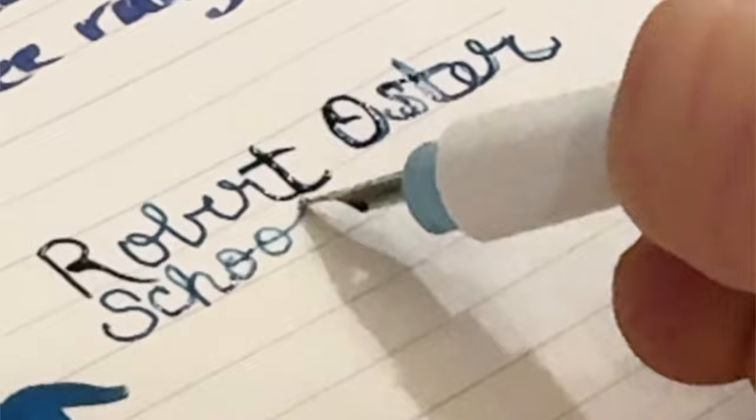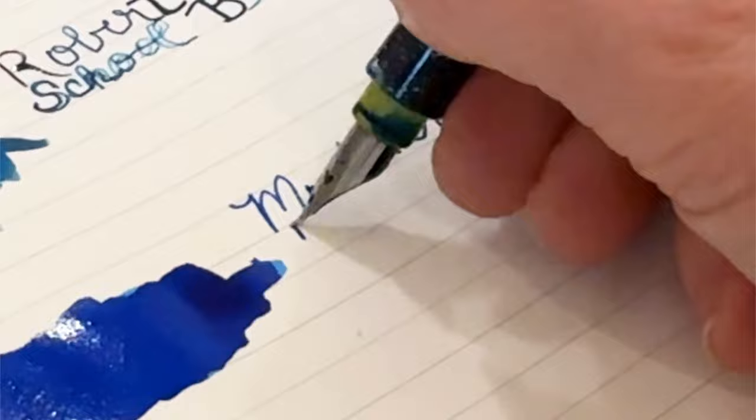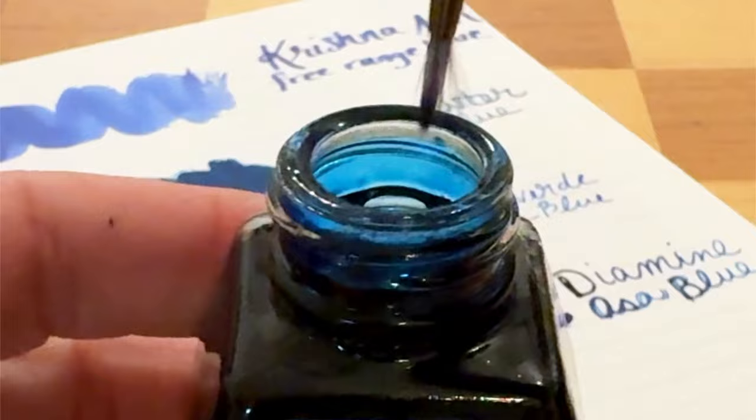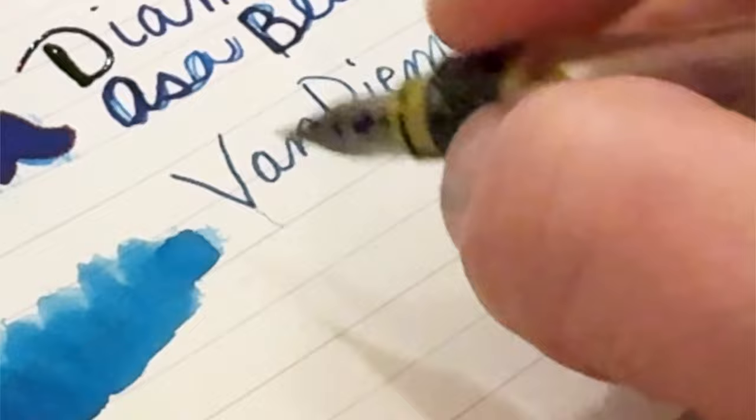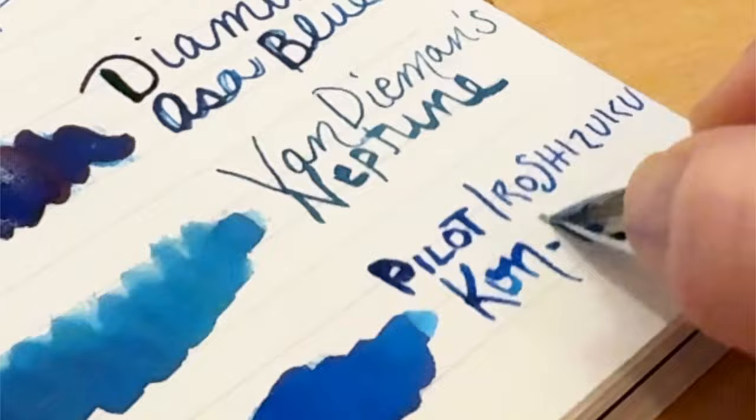The next one is Monte Verde's Capri Blue ink, and then we have a beautiful Diamine ink, and this is Asa Blue. Our next Everyday Blue ink is from Van Diemen's, and this is Neptune ink from the Solar System ink collection. And last, we have Pilot Konpiki ink from their Iro Shizuku collection.